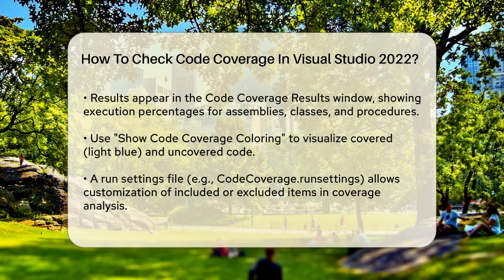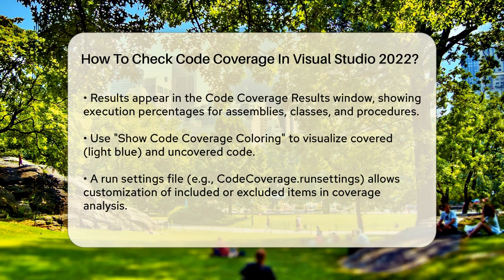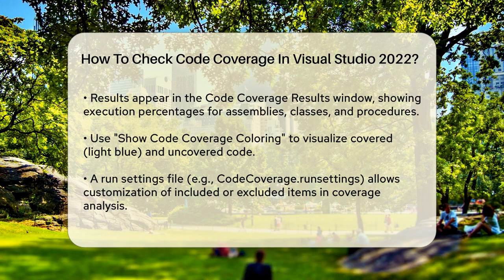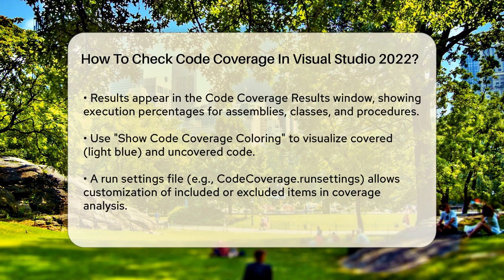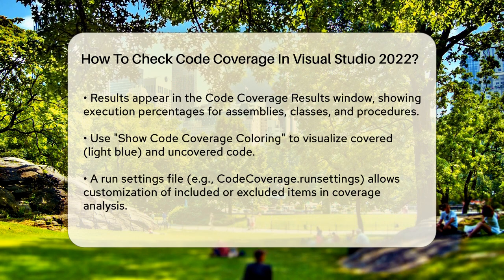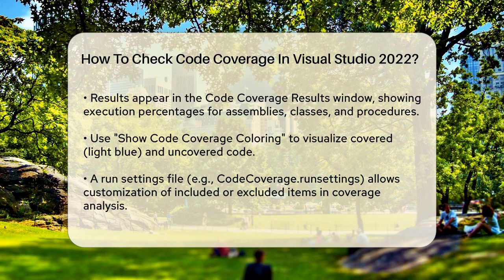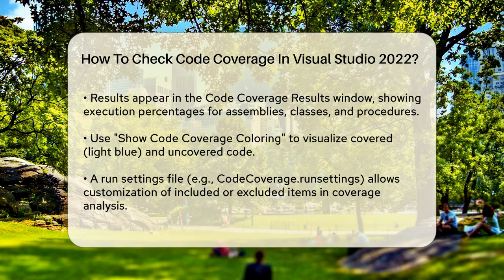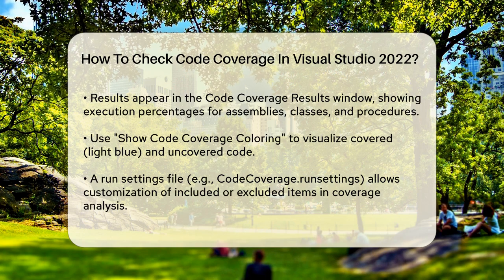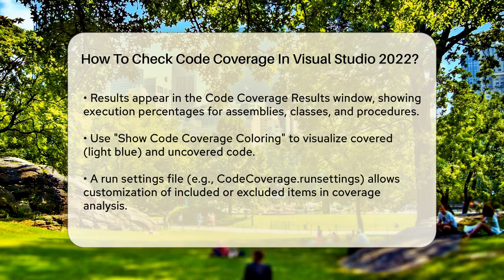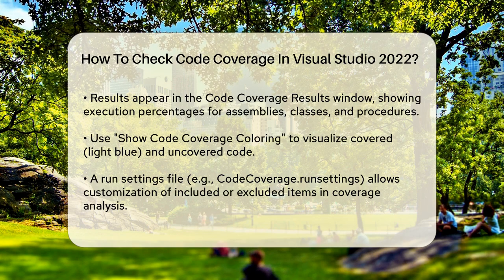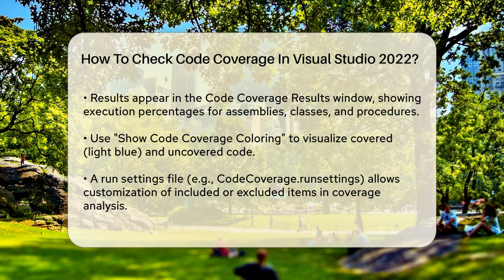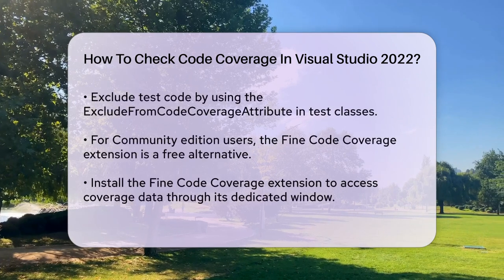If you need more detailed control over what is included or excluded from the code coverage, you can use a run settings file. This file, typically named something like 'CodeCoverage.runsettings', allows you to specify which assemblies, classes, or methods to include or exclude from the analysis. For example, you can exclude test code by adding the ExcludeFromCodeCoverage attribute to your test classes.